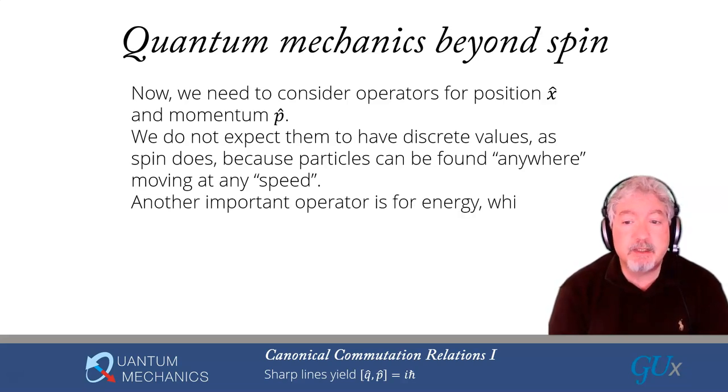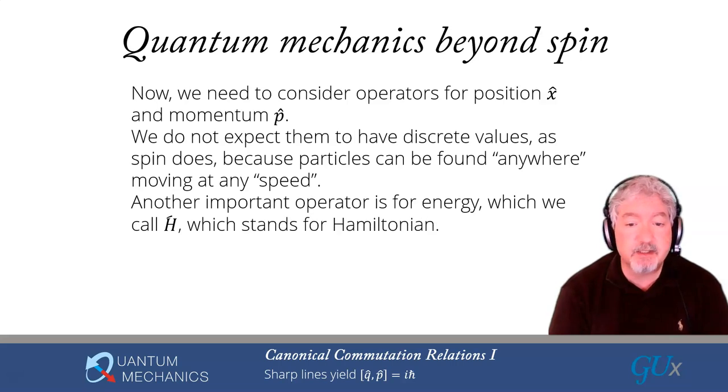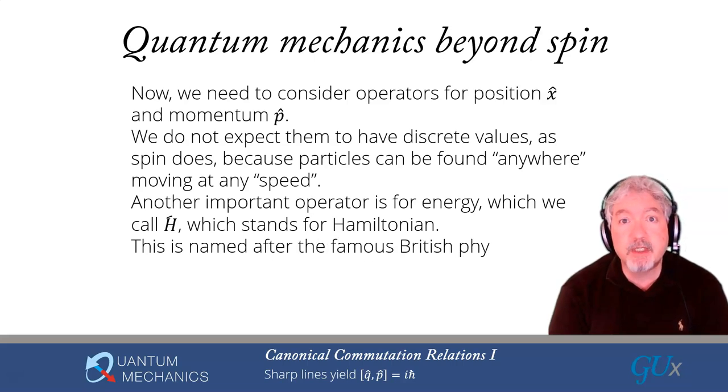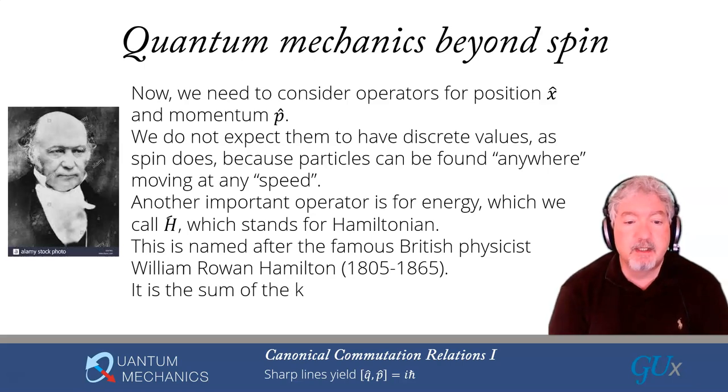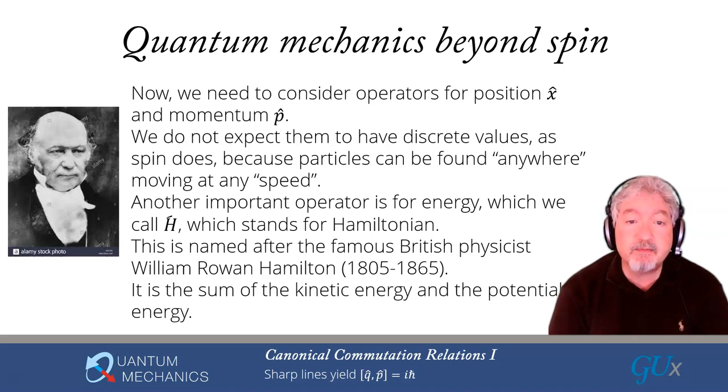Another important operator that we need to consider is the energy, because in physics we know that the energy plays a big role in essentially anything that we're doing. And the operator for energy is called H-hat. In this image, unfortunately, the hat got cut off halfway through. And the H stands for Hamiltonian, named after a very famous British physicist named William Rowan Hamilton. He lived from 1805 to 1865. The Hamiltonian is simply the sum of the kinetic energy and the potential energy, at least for the problems that we're going to be considering through most of the class.